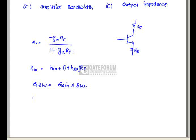Whereas output impedance is defined as 1 plus Gm RE into RCE, where RCE is the collector to emitter resistance.